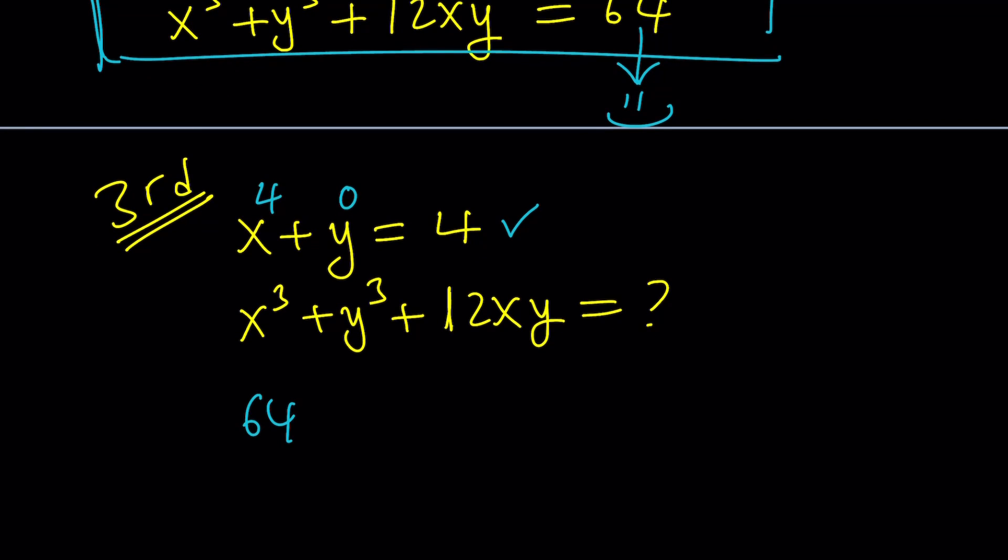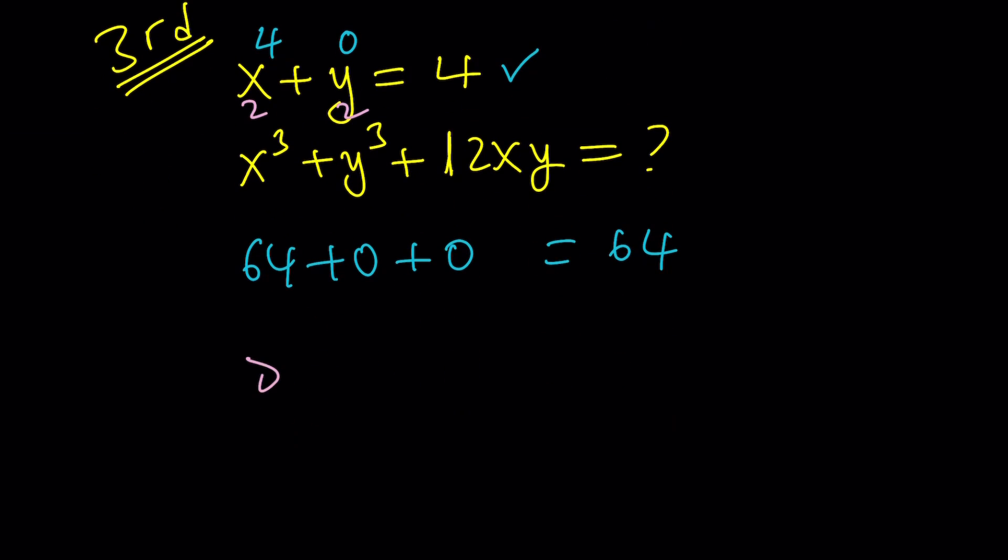4³ = 64, y³ = 0, and obviously this is also 0, which is nice. Obviously using 0 is a good idea. But what if you're not convinced and want to use more values? That's fine. Let's use 2 and 2. It's symmetrical. 2³ = 8, 2³ = 8, and 12 × 2 × 2 = 12 × 4 = 48. 16 + 48 = 64. Wow. One more time.